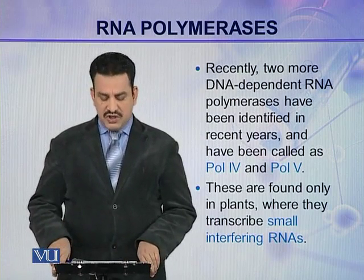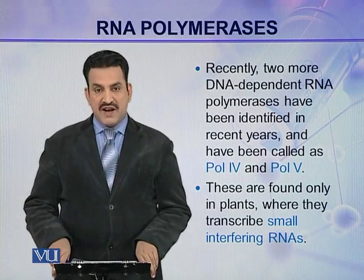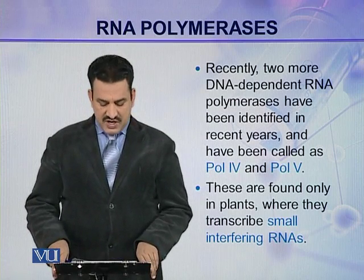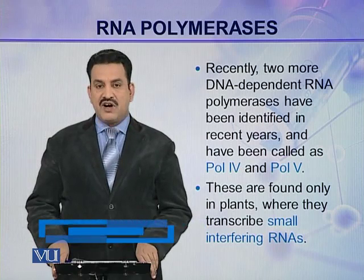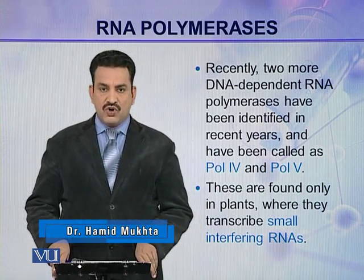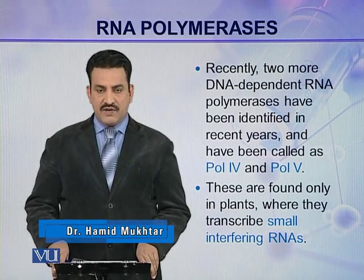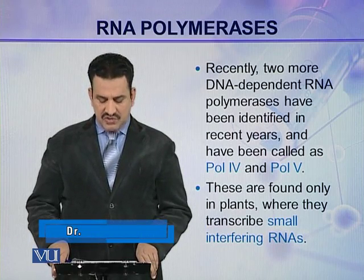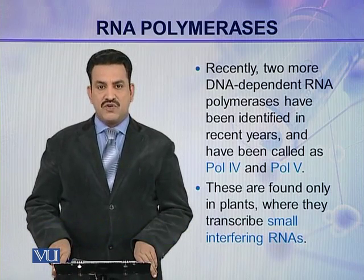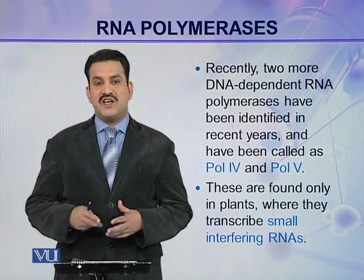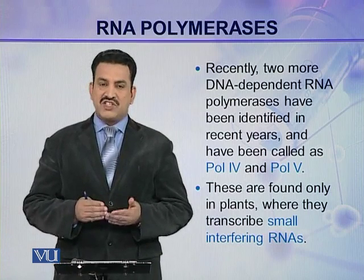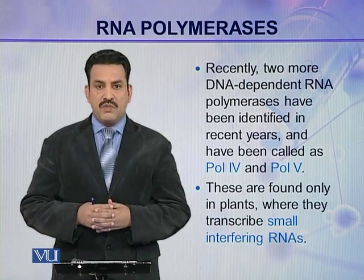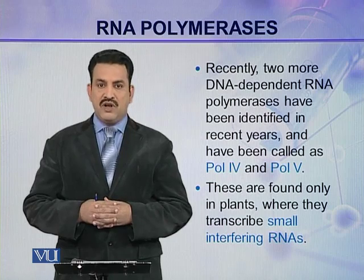Recently, two more DNA-dependent RNA polymerases have been identified, called polymerase 4 and polymerase 5. These are found only in plants, where they transcribe small interfering RNAs, that is siRNAs. So the transcription of these siRNAs is performed by pol 4 and pol 5.